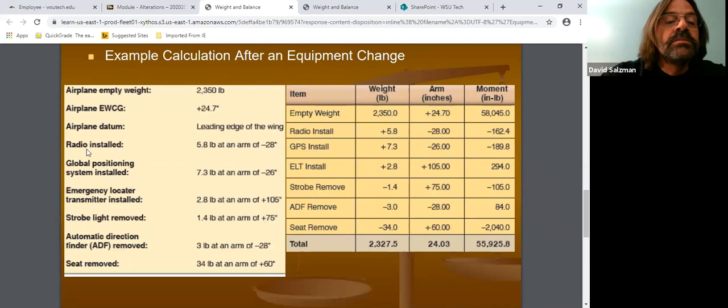So it says right here I'm installing a radio. So I just put item radio install. So I do that so we know that I'm actually installing it, and it weighs five pounds. Since I'm putting it in, it's a positive five. Then it gives you the arm, which is a negative 28, and of course, get the moment, take it across. And you do that with each one of these.